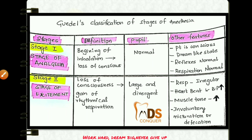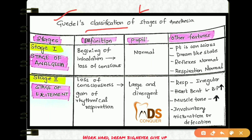The classification of stages of anesthesia was given by Guedel. There are four stages, and in the third stage there are four planes. An important point to remember is that the first and second planes are where we conduct dental surgical procedures. Stage one of anesthesia is called the stage of analgesia, and it begins from inhalation to the loss of consciousness.